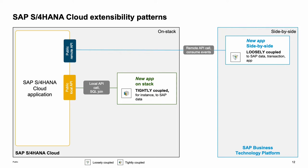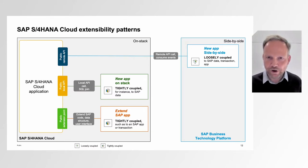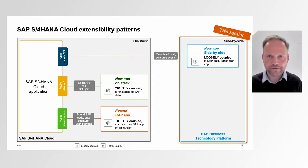The second option is the so-called on-stack option for S/4HANA Cloud, newly introduced with embedded Steampunk. With that approach, it's now possible to build new apps within the S/4HANA Cloud stack, which calls local APIs of the S/4HANA Cloud system, following the same principle as within Steampunk — enforcement of using released local APIs. The third option is extending SAP-delivered apps by predefined extension points, which are also released.